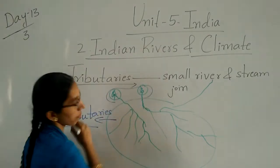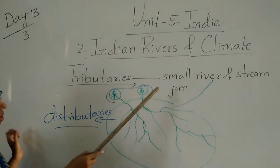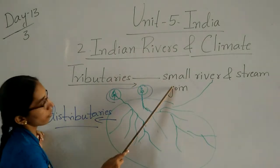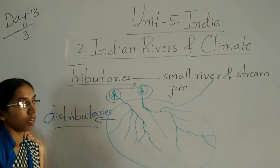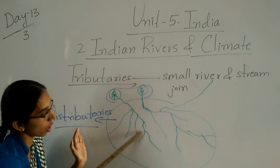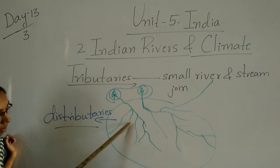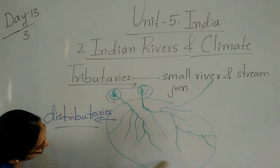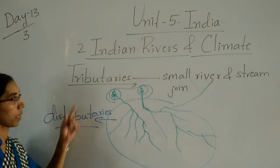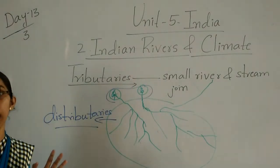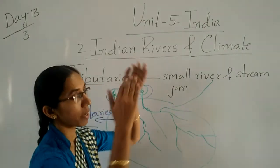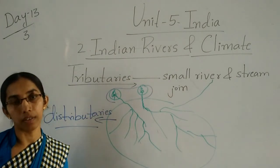To clarify: small rivers and streams that join together and form a big river — those joining streams are called tributaries. But before merging, when a river divides and breaks into small rivers and streams, that breaking is called distributaries. Tributaries and distributaries are different — don't confuse them.